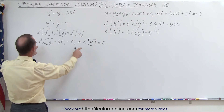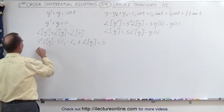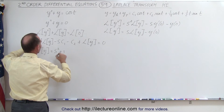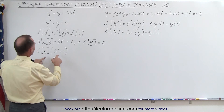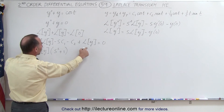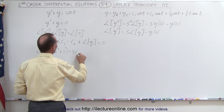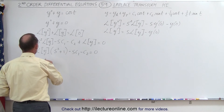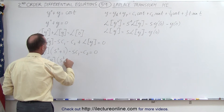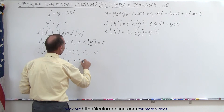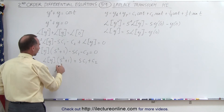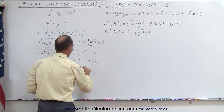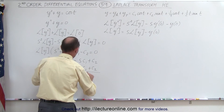We can factor out the Laplace transform of y. So we have the Laplace transform of y times the quantity s squared plus one, and on the other side we have negative s times c1 minus c2, equal to zero. Moving those terms across the equal sign, we get the Laplace transform of y times s squared plus one equals s·c1 plus c2. Dividing both sides by s squared plus one gives us: the Laplace transform of y equals s·c1 plus c2, all divided by s squared plus one.